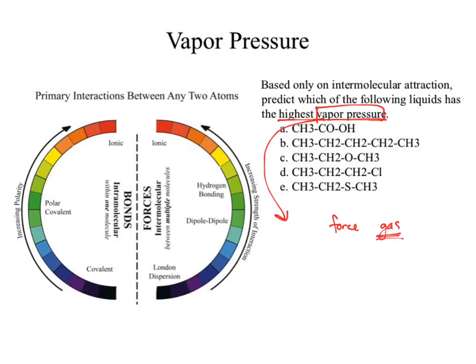Why might that be weird? The question references 'which of the following liquids.' If I have a liquid, why am I talking about a gas? Vapor pressure — it's the force of a gas coming from the liquid. It actually makes you think. But this is literally just the definition of that term.